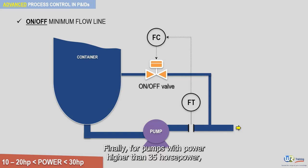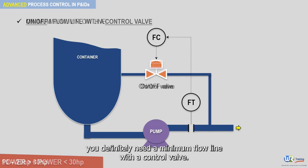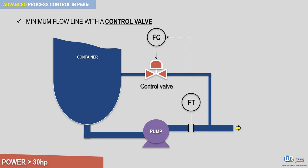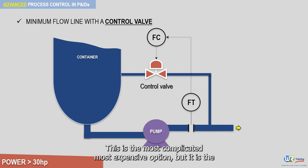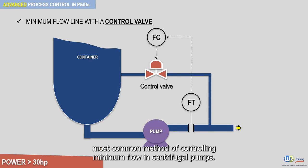Finally, for pumps with power higher than 35 horsepower, you definitely need a minimum flow line with a control valve. This is the most complicated and most expensive option, but it is the most common method of controlling minimum flow in centrifugal pumps.